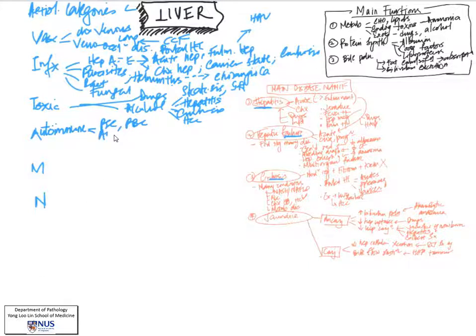There can also be autoimmune hepatitis where the liver cells are damaged by autoimmune reactions, often associated with the presence of serum autoantibodies.